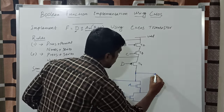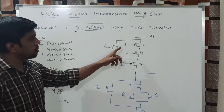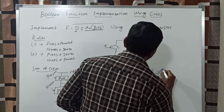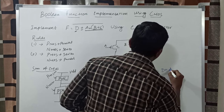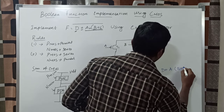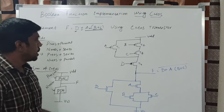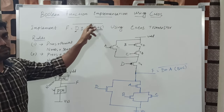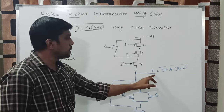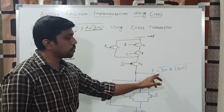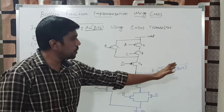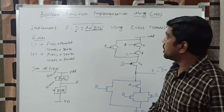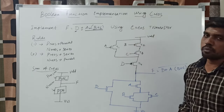Now, take the output from the pull-up network and pull-down network. The function is F equal to D plus A dot B plus C. However, in this implementation there is no complement represented in the given problem, so you connect one more inverter at the output of this circuit to get the final result.